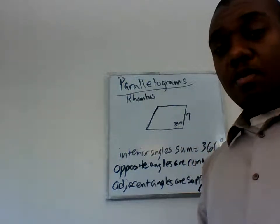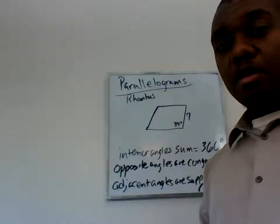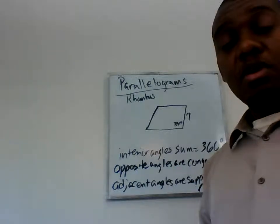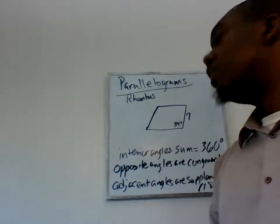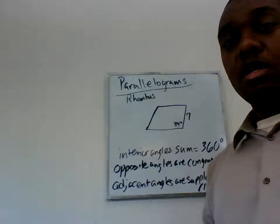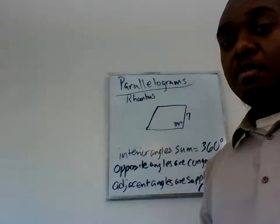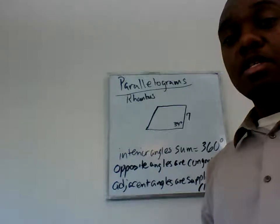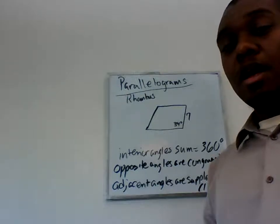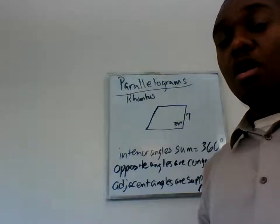Let's say we have a rhombus — and a rhombus is a parallelogram. You're given that one of the angles in the rhombus is 34 degrees and one of the sides is 7. If you have this information, knowing that this is a parallelogram and more specifically a rhombus, you now know everything else in this quadrilateral — all the sides and all the angles.